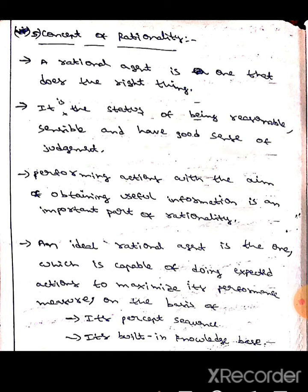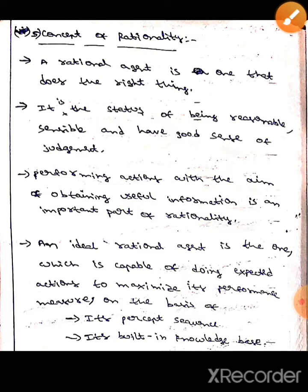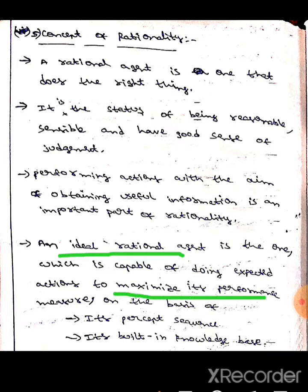Here, the important part of rationality is to perform actions with the aim of obtaining useful information. An ideal rational agent performs actions in order to maximize its performance measure on the basis of its percept sequence and its inbuilt knowledge.